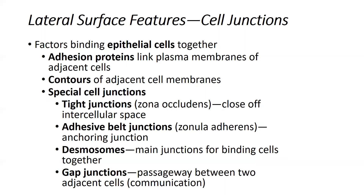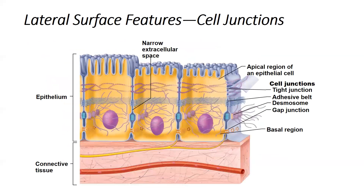Adhesive belt junctions, also called zona adherens, are anchoring junctions. Certain proteins stick out of the cell and are connected to the cytoskeletal elements inside the cell. These filaments running around the cell connect to those adhesive proteins, which stick out the lateral domains of each cell and grip the lateral domains of the adjacent cell. Basically, a belt runs around the lateral surface of the cell, anchoring one cell to the next.